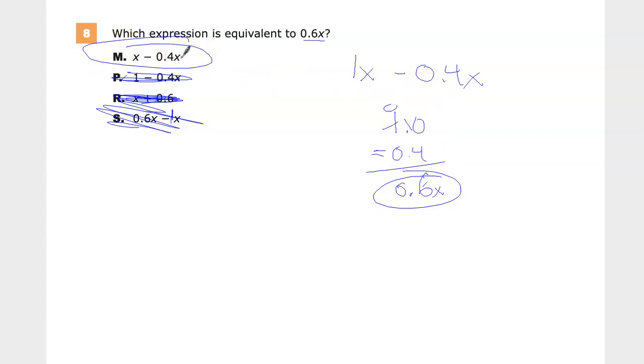So a couple things to think about here. You could have eliminated two of these immediately just because they were trying to combine like terms. You can't have P or R be correct answers because those terms are not like terms. One has an x and one doesn't.